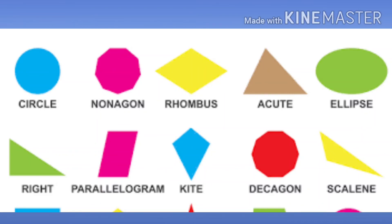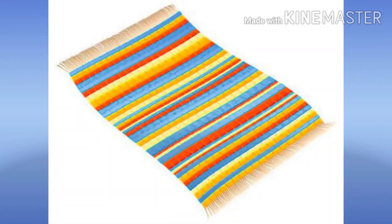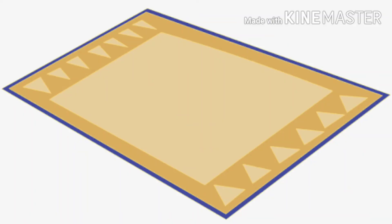For example, take the mat on which you sleep. The part of the mat on which you can sit, sleep, or put anything is its area. But the outline or boundary of the mat is its perimeter. You can put things on the mat's area, but if you try to place things on the perimeter, they would be on the floor.